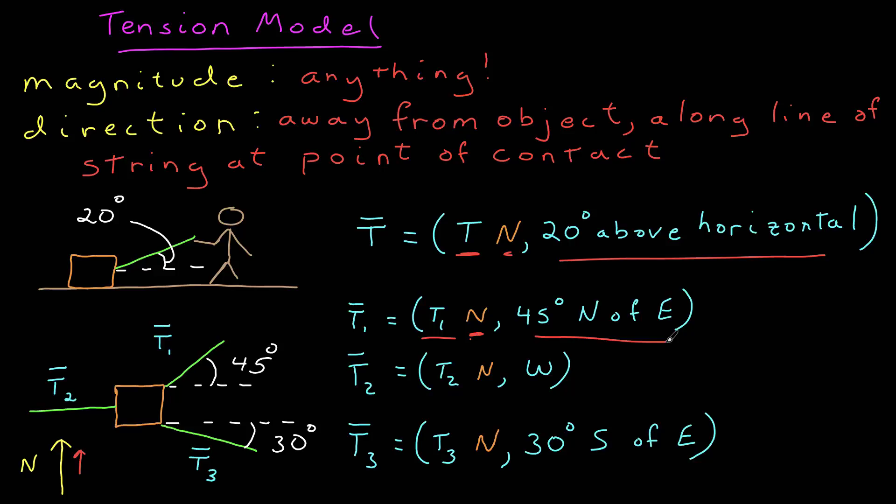For tension 2, it has a magnitude T2, also in newtons, and its direction would be west. T3 then has a magnitude T3 in newtons, and its direction is 30 degrees south of east.